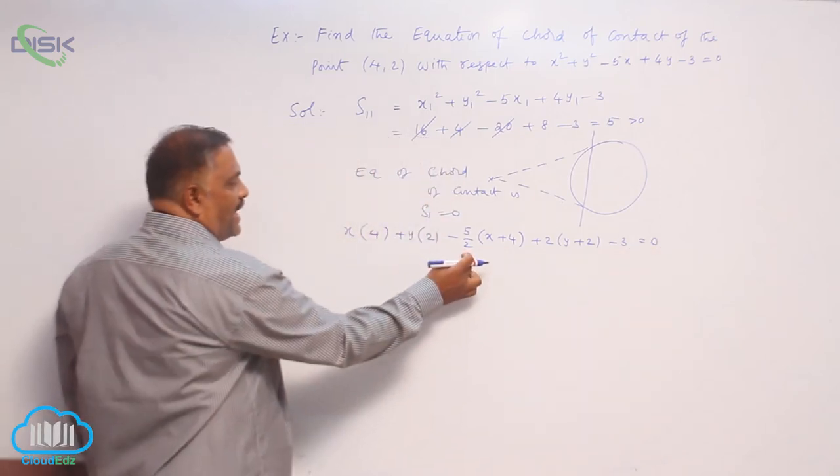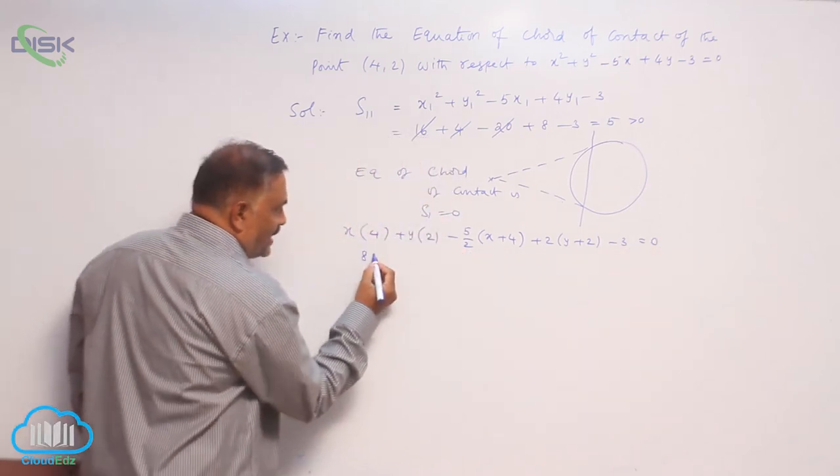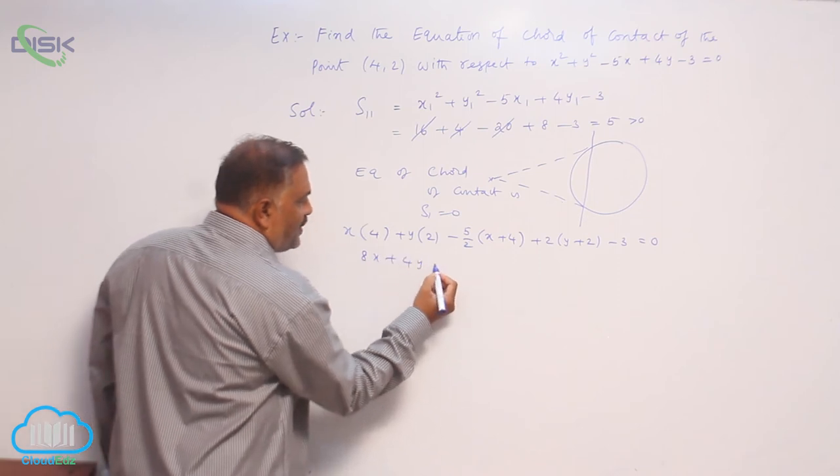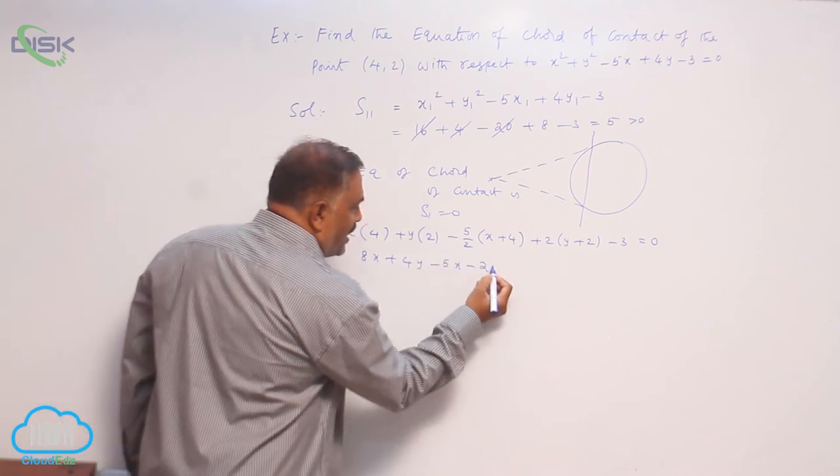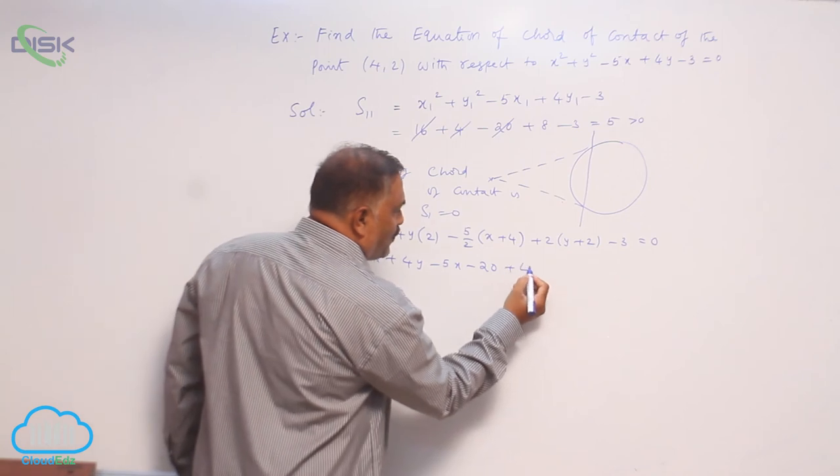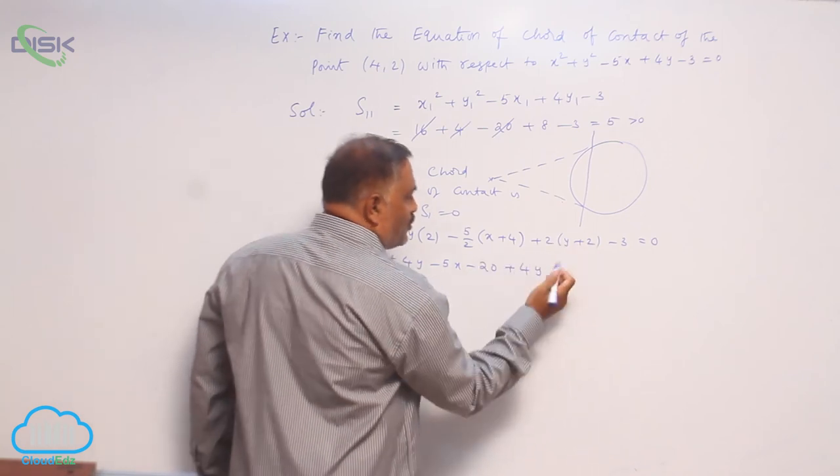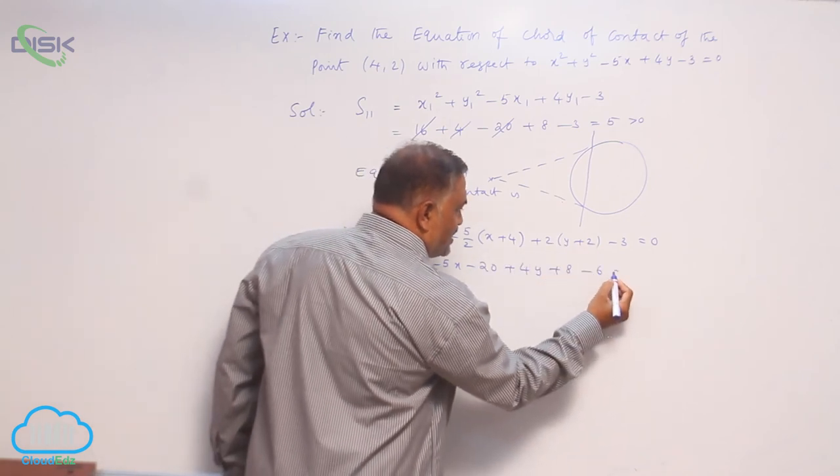Now take LCM. This is 8x plus 4y minus 5x minus 20 plus 4y. Again, 4 twos are 8 minus 6 is equal to 0.